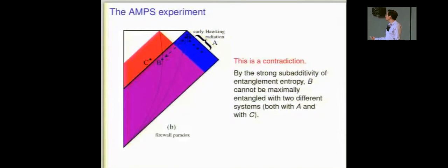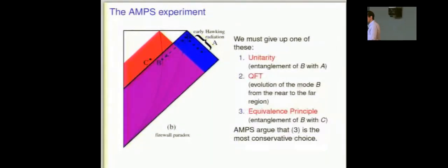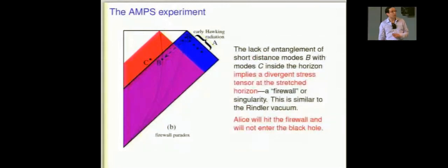One can show that that system cannot be maximally entangled with two distinct other systems. Both with A and with C. So that's a contradiction. So we must give up, it seems, either unitarity, the entanglement of B with A, that came from unitarity, or quantum field theory. I guess we could imagine that there's something that breaks down in evolving this Hawking quantum backwards and forwards from the near to the far from the horizon region. But why? Everything is way above the Planck scale. Or, third option, we have to give up the entanglement of B with C. In other words, we have to give up the equivalence principle. And that's what AMPS argue is the most conservative choice.